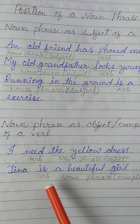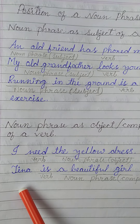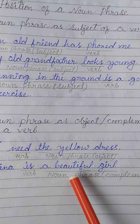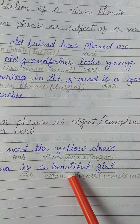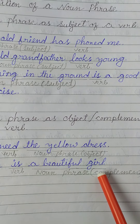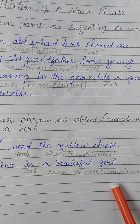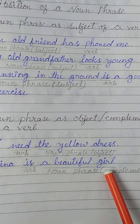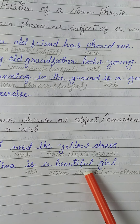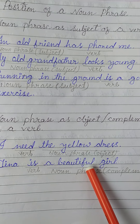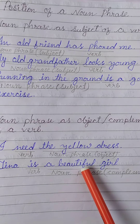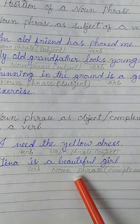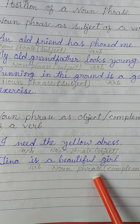So in this sentence, 'Tina' is the subject, 'is' is the verb, and 'a beautiful girl' is the complement. This group of words, 'a beautiful girl', acts as a noun of the verb 'is'. That's why we can say this group of words is a Noun Phrase.